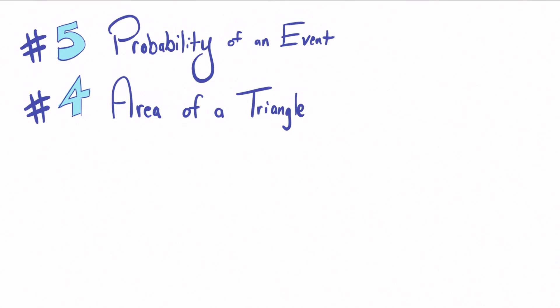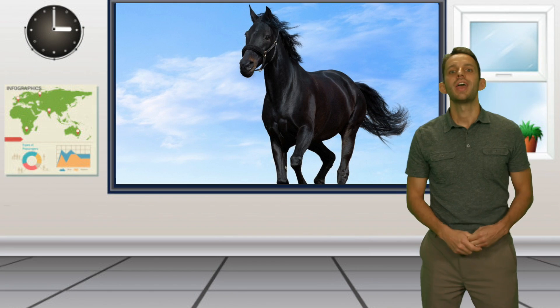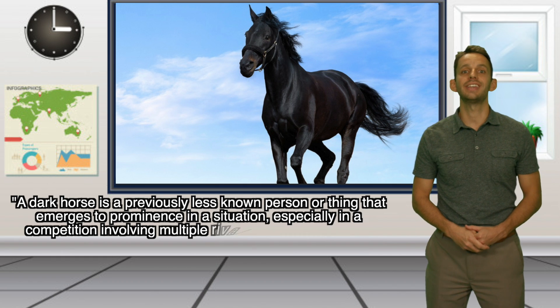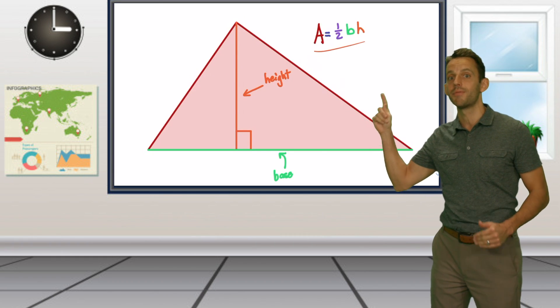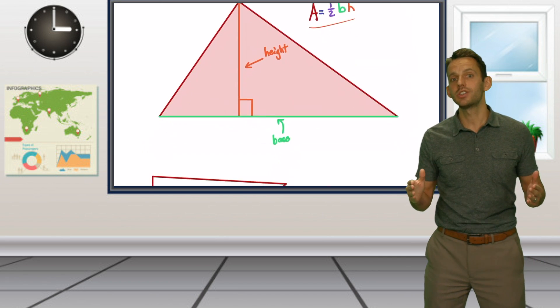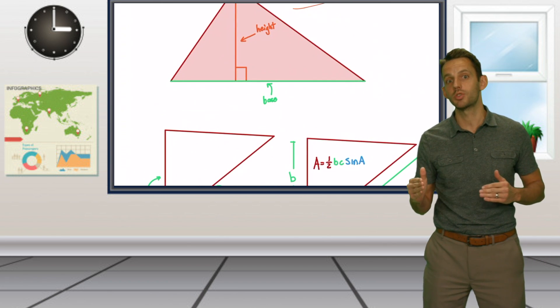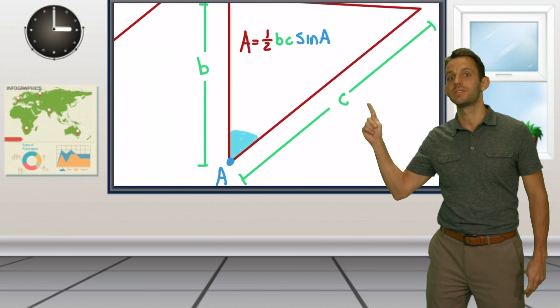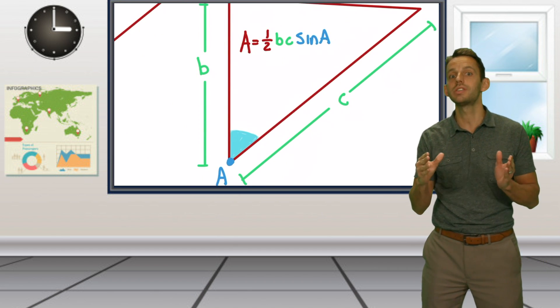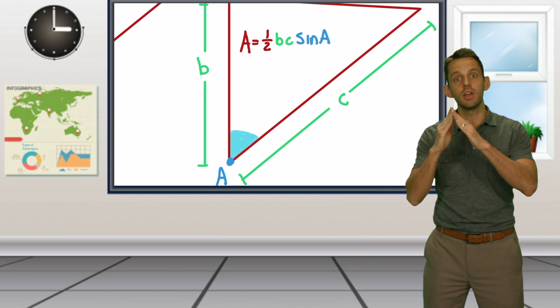Number four, area of a triangle. A dark horse candidate for our top five list is the area of a triangle formula, which many know to be area equals one-half base times height. However, for high school, an alternate formula using trigonometry becomes extremely useful. This formula is A equals one-half B times C times sine of A, when given two sides of the triangle and an angle in between.